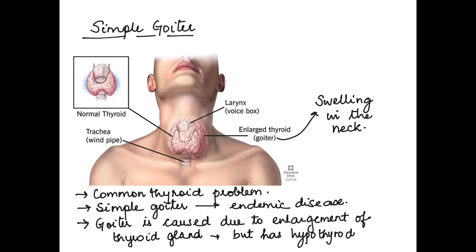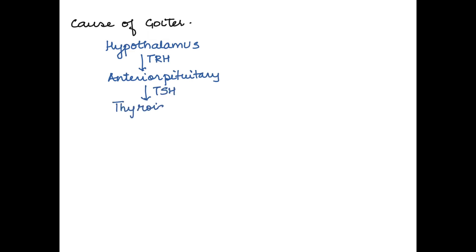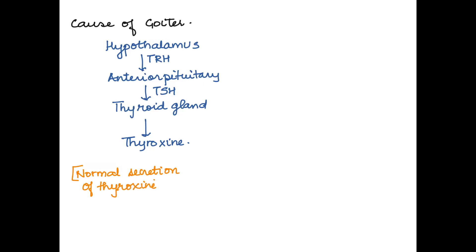Now what causes simple goiter? Let's first see how the secretion of thyroxine happens normally. It begins from the hypothalamus, which sends a releasing hormone — TRH, or thyrotropin releasing hormone. This TRH acts on the anterior pituitary, which releases TSH — thyroid stimulating hormone — in return. TSH then acts on the thyroid gland, which releases thyroxine. This is the normal way the secretion of thyroxine happens.